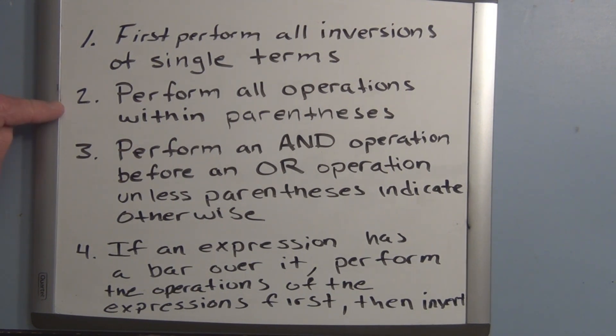The first thing you want to do is to perform all inversions of single terms, perform all operations within parentheses, perform AND operations before an OR operation, unless parentheses indicate otherwise. And lastly, if an expression has a bar over it, perform the operations of the expressions first, then invert.